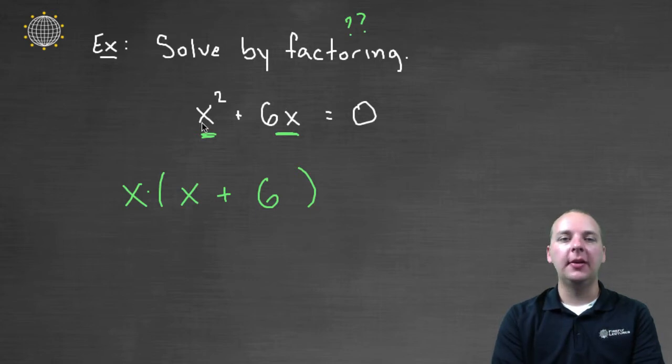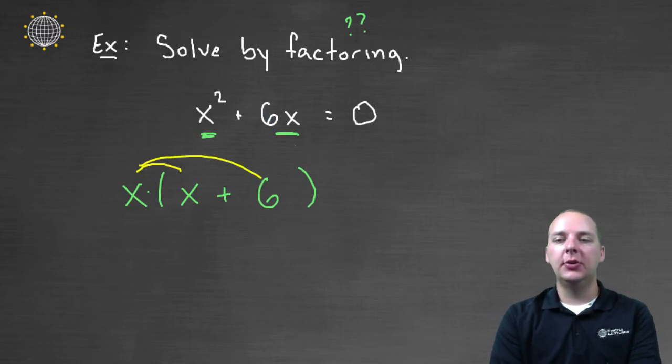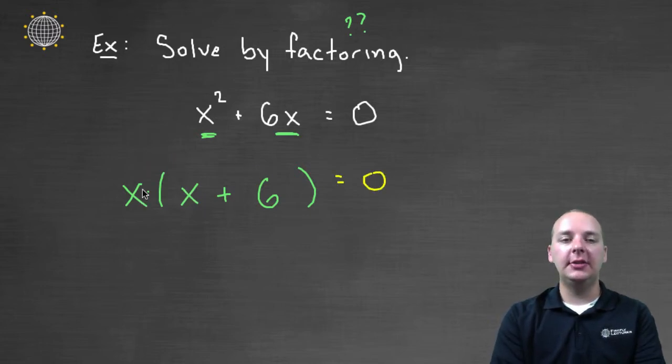That's the same as x² + 6x. You can think of just distributing this x through, and you're right back where you started. So in actuality, we have x(x + 6) = 0. And check it out, we've factored the quadratic—we've created a product here.